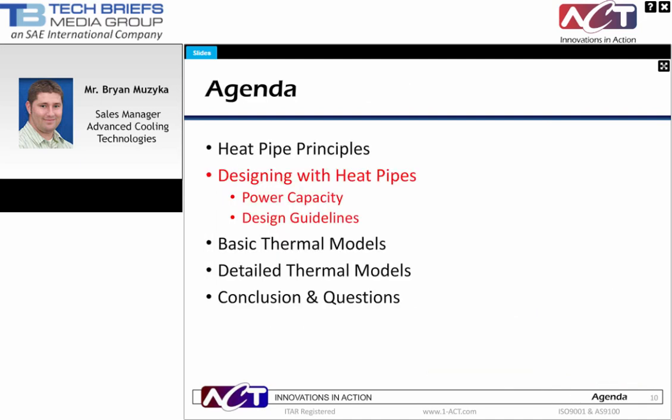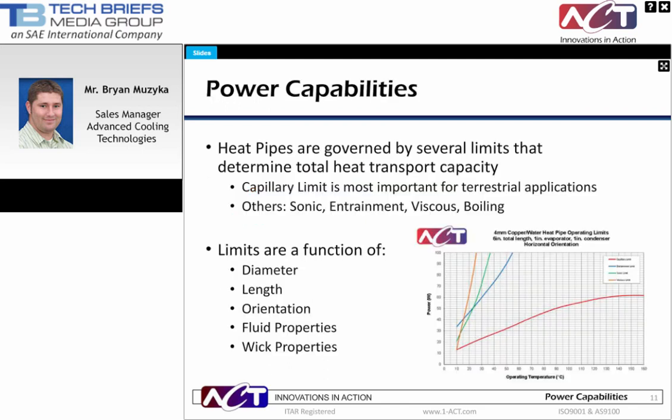Next, we'll talk about designing with heat pipes — determining power capacity and providing guidelines to help you integrate heat pipes into your system. Heat pipes are governed by several limits. For terrestrial applications, the first limit reached in most cases is the capillary limit, which is the ability of the wick structure to overcome the various internal pressure drops created in the heat pipe. Other limits include the sonic, viscous, and boiling limits. The figure shown here is a plot for all the various limits, and as you can see, the capillary limit determines the capacity in this case. The limits are a function of diameter, length, orientation, fluid properties, and wick properties.